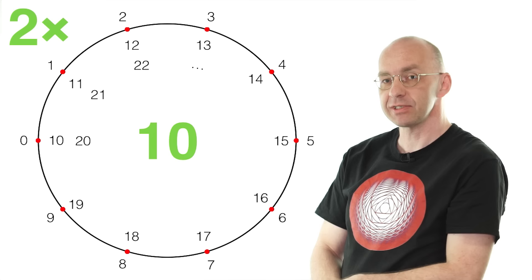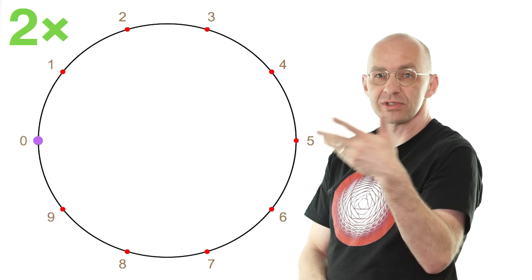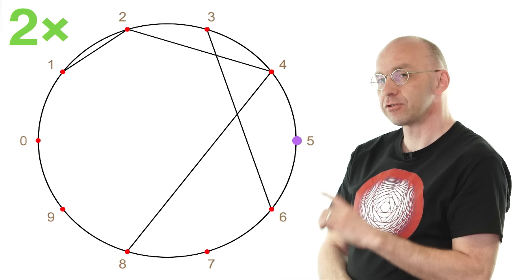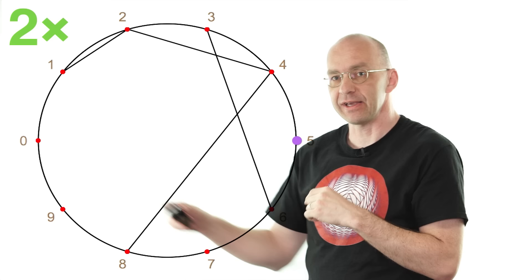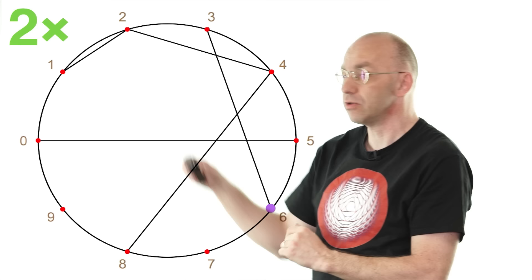And now we're going to do the 2 times table. So 2 times 0 is zero, so we don't do anything. 2 times 1 is 2, so we connect the 1 to the 2. Then 2 times 2 is 4, so we do this and we keep on going. Pretty obvious. Now 2 times 5 is 10. Remember, 10 is also over there, so we connect that guy up. And then 2 times 6 is 12, which is also the 2, so we connect that one and we keep on going like this.